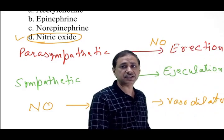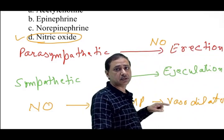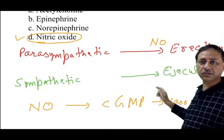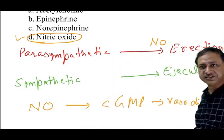Cyclic GMP is actually a vasodilator. And because of this vasodilation erection is achieved.